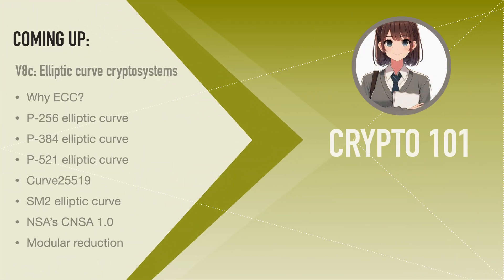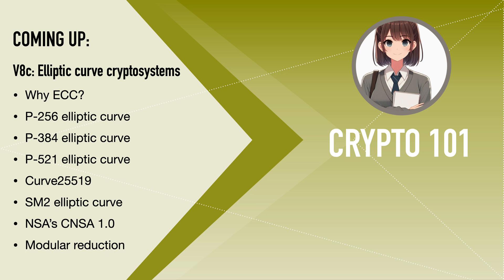In the next lecture, we'll introduce the notion of elliptic curve cryptography and explain the advantages of elliptic curve cryptosystems over their RSA counterparts. We'll present the three elliptic curves that are most commonly used in practice: P-256, Curve25519, and P-384. We'll explain why the primes used for these elliptic curves are sums and differences of a small number of powers of two.